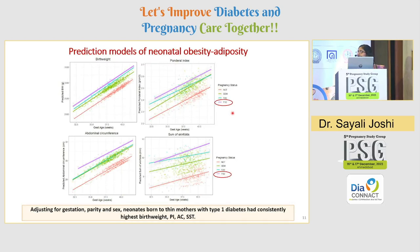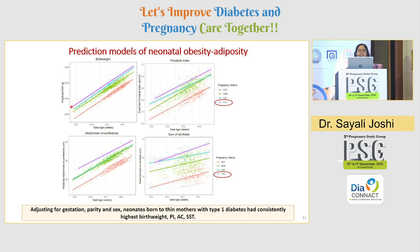We used predictive modeling to plot neonatal outcomes across the range of normal gestational age. Once again, after adjusting for gender, gestation, and parity, neonates born to thin mothers with type 1 diabetes had consistently the highest birth weights, ponderal indexes, abdominal circumferences, and sum of skinfolds.